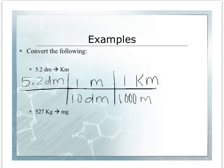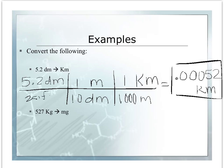Take your calculator. Put in 5.2, times it by 1, divide by 10, times it by 1, divide by 1,000. And you get .00052 kilometers and 5.2 decimeters. Check your sig figs. First one has two sig figs, your original value. Your ending value has two sig figs. So your answer is correct.